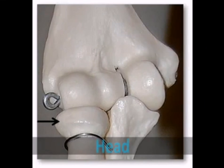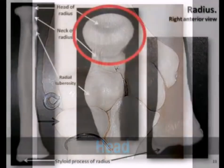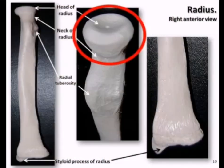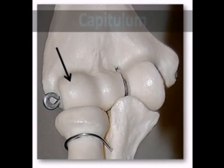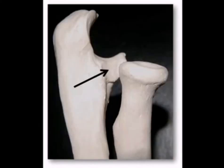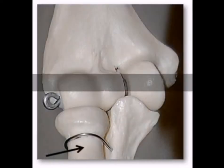The head of the radius is located at the proximal end of the bone. It has a round disc shape that resembles a slightly warped hockey puck. The round head of the radius articulates with the capitulum of the humerus as well as the radial notch of the ulna. Just inferior to the head is the narrow neck of the radius.